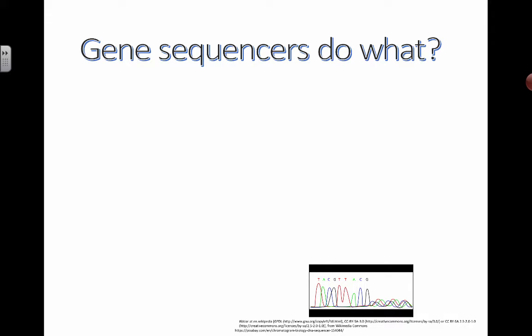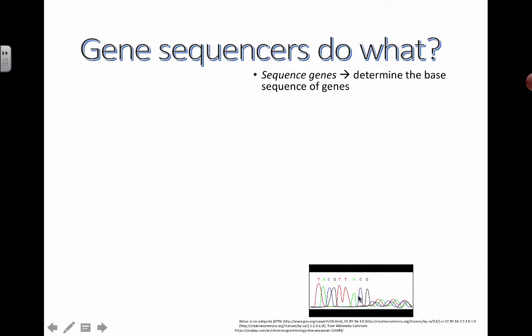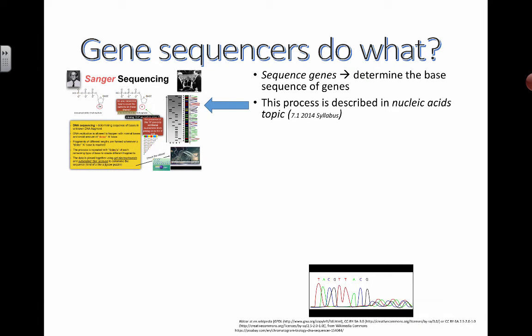In this video we're going to talk about what gene sequencers do. There have already been several videos about gene sequencing. What it actually means is to sequence a gene is to determine the base sequence of that actual gene — to figure out the relative T's, A's, C's, G's, the order that they're actually spelled out in. You can reveal a lot of information by being able to sequence or determine an actual base sequence.